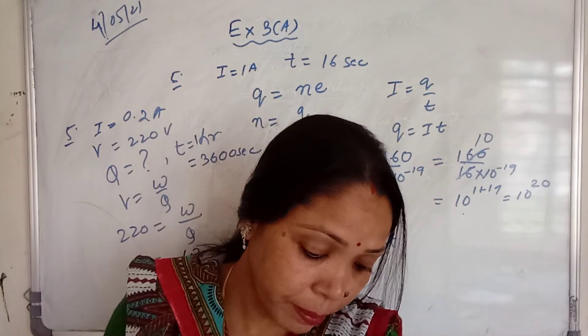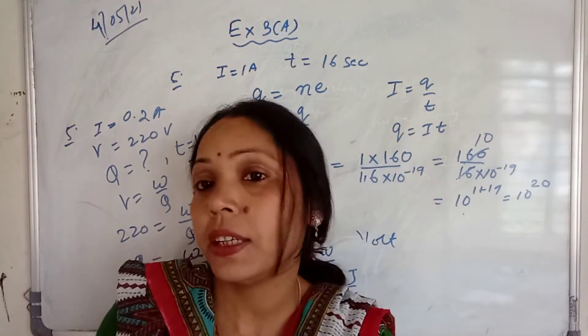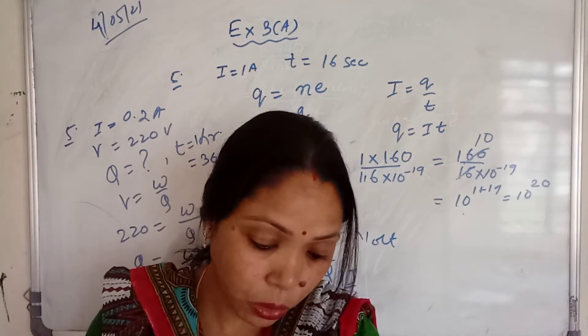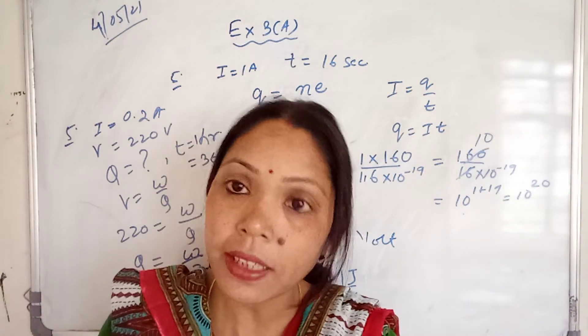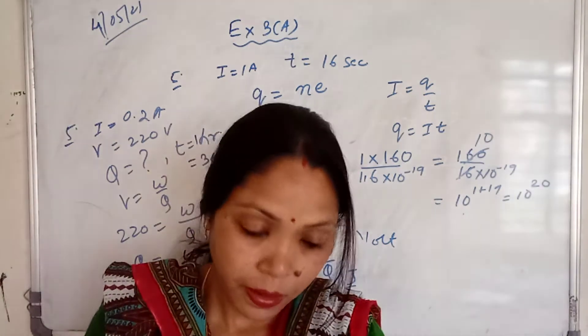Should the resistance of an ammeter be low or high? It is low. Give reason: it is low because practically it does not consume any electric energy.